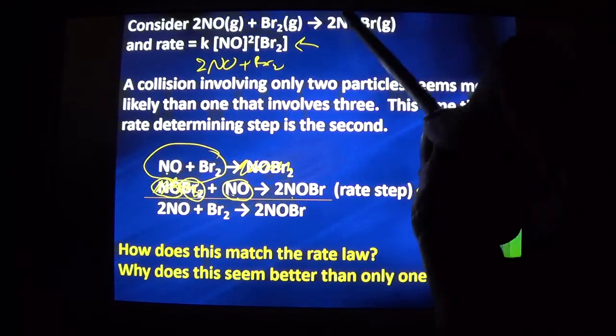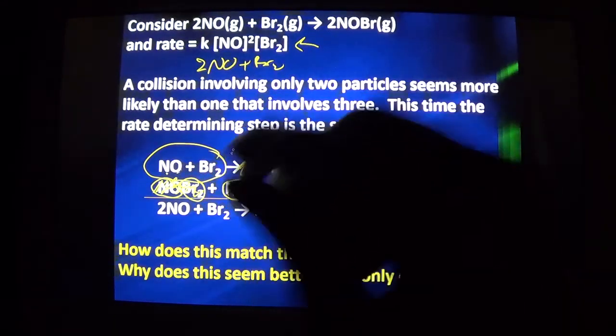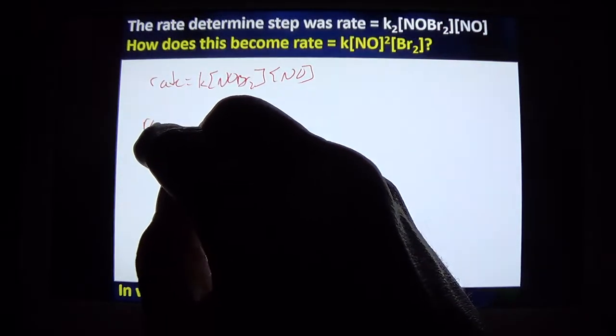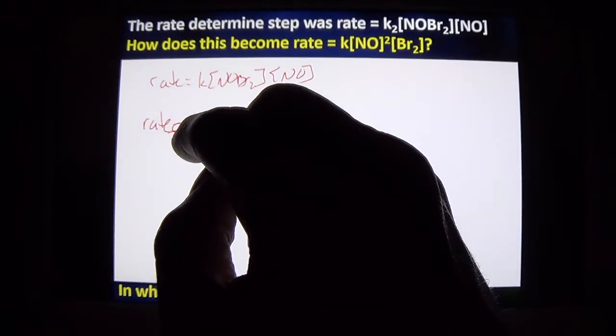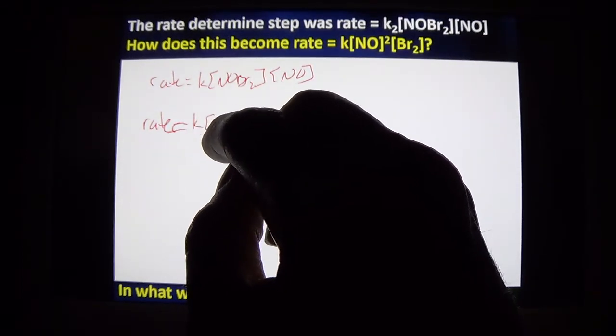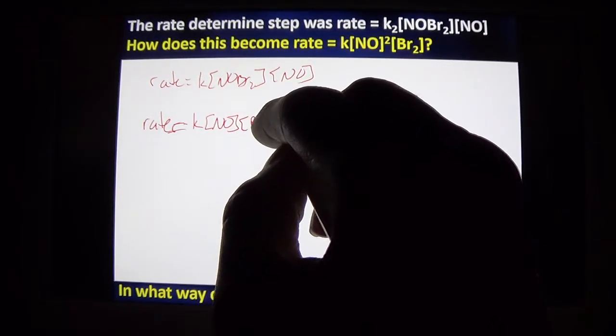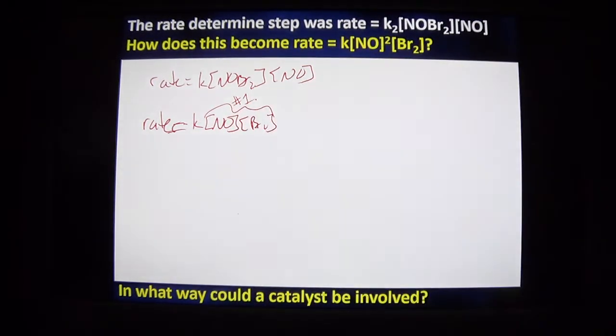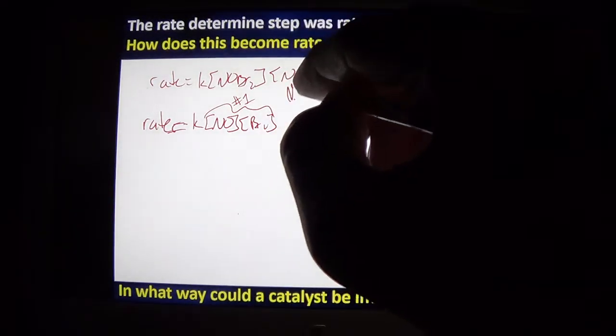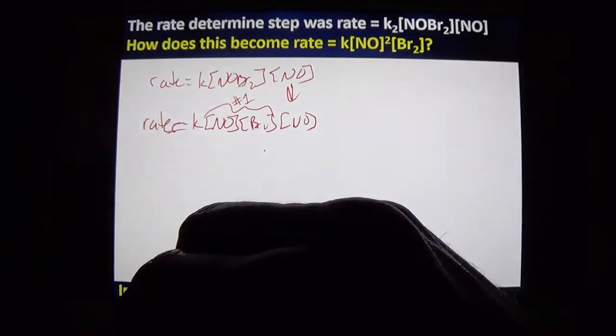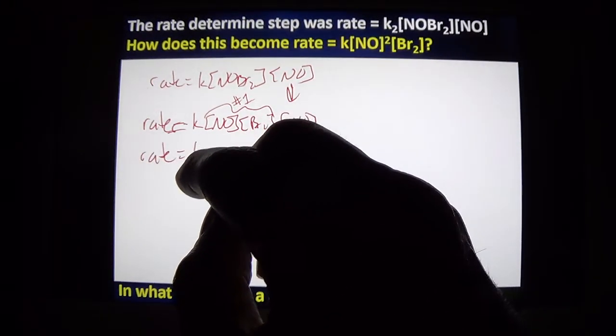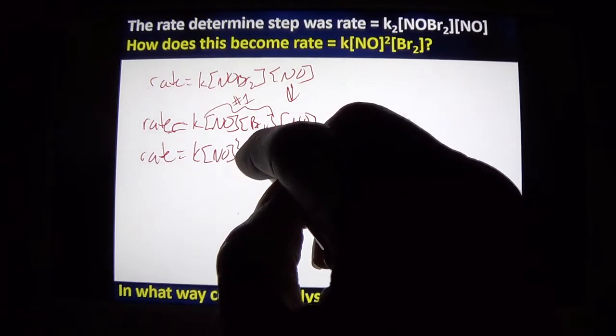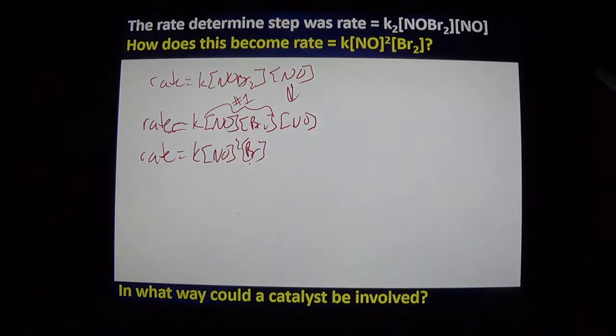Our rate right now is that K equals NOBR2 times NO. But NOBR2 is not in my balanced equation anywhere, and I have to use only reactants in my balanced equation. So what does NOBR2 equal? If you think of the arrow as an equal sign, NOBR2 equals NO plus BR2. I got this from substituting from equation number one in that mechanism. Now this NO is still hanging around, and now I group my like terms. So I've got K NO squared BR2. So it does match.